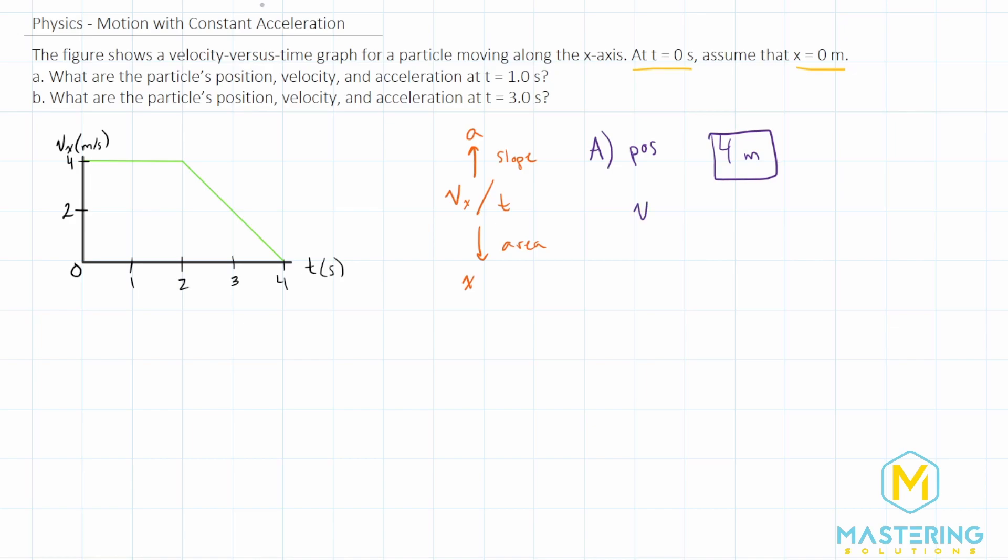For the velocity at one second, it's a flat line. So it's not speeding up or slowing down. It's just going at the constant velocity of four meters per second.